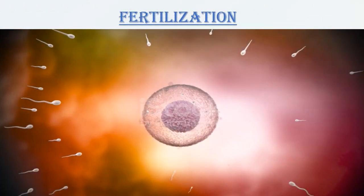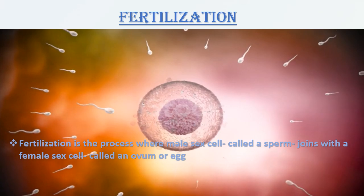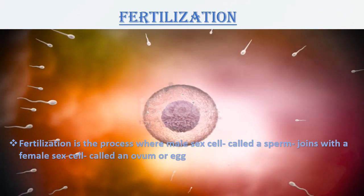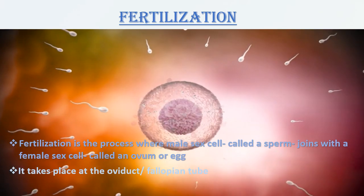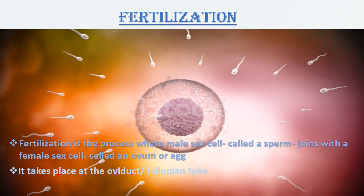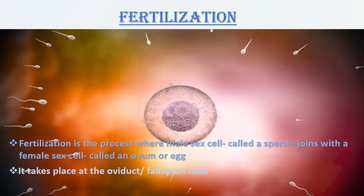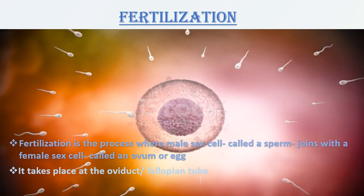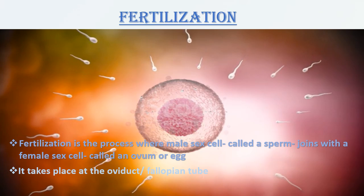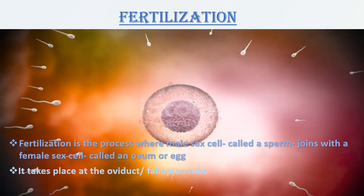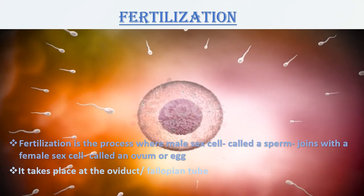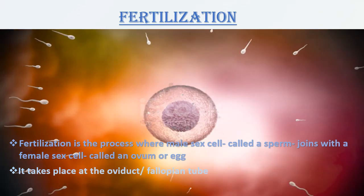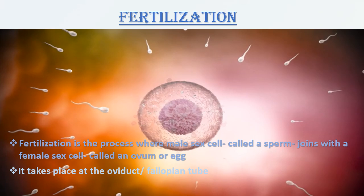Fertilization is simply the process where the male sex cell, called a sperm, joins with a female sex cell, called an ovum or egg. Fertilization takes place at the oviduct, or the fallopian tube — which is the other name for the oviduct. Only one sperm fertilizes the egg, and thereafter, the egg forms a barrier to stop other sperm. After the one sperm has entered the egg, they fuse to form a single cell called a zygote, and this is the beginning of a new life.